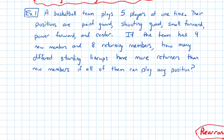There are 5 positions, so I'm going to put 5 slots: 1, 2, 3, 4, 5. I'm going to call point guard PG, shooting guard SG, small forward SF, power forward PF, and center C.